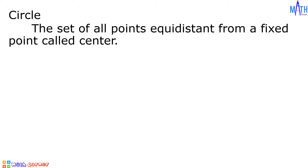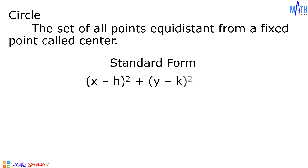A circle is the set of all points equidistant from a fixed point called the center. The standard form of the equation of a circle is (x minus h) squared plus (y minus k) squared is equal to r squared, where the point (h, k) is the center of the circle and r is the radius.